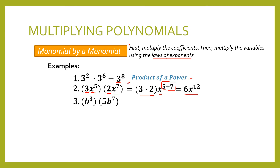For example 3, we have b cubed times 5b raised to 7. The numerical coefficient of our multiplicand is 1. So we have 1 times 5, and then we have b raised to 3 plus 7, since the exponent in our multiplicand is 3 and in the multiplier the exponent of b is 7. When we solve that, the final answer is 5b raised to 10.